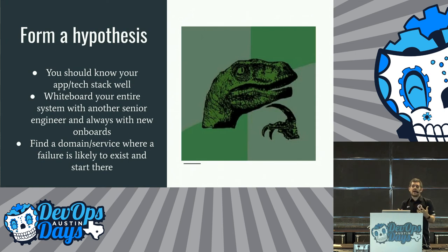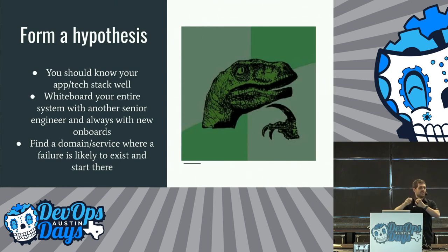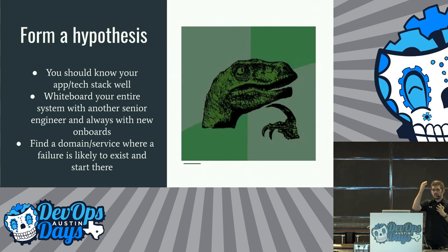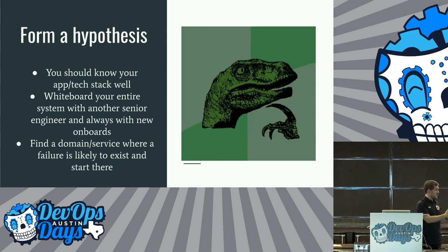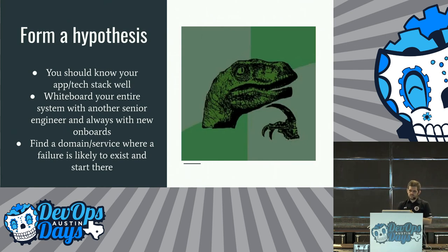Next principle: form a hypothesis. You should know your application and tech stack very well — from requests coming in on the internet all the way down to bytes on disk. If there are holes in that, things can go wrong, and that's when you get paged at 2 in the morning. Part of forming a hypothesis means using a whiteboard — grab a senior engineer, walk through the systems: front end, middleware, database. Find a domain and service in your stack where failure is likely to exist and start there. For example, your front-end Nginx server — let's start there and see what we can do.